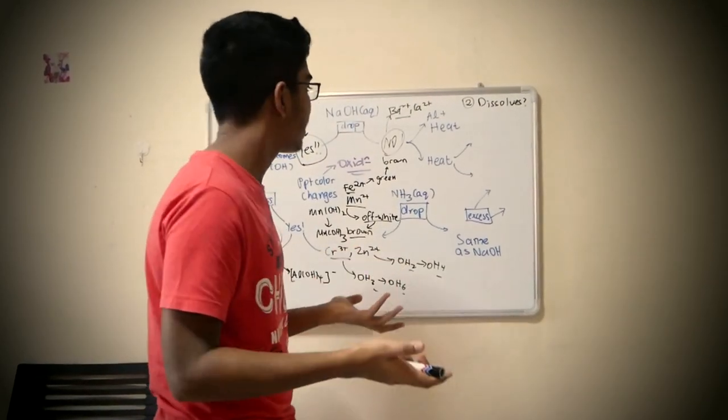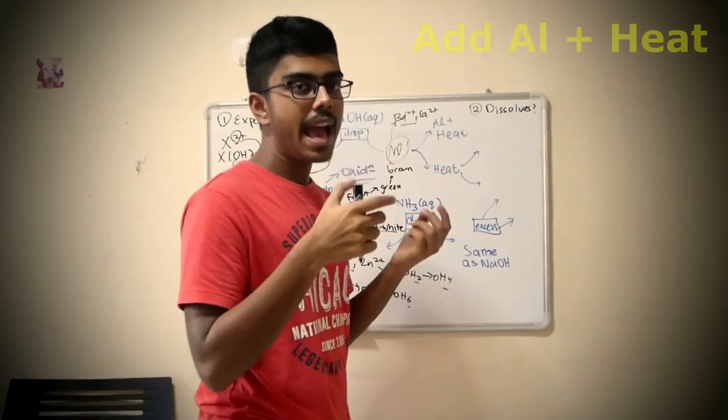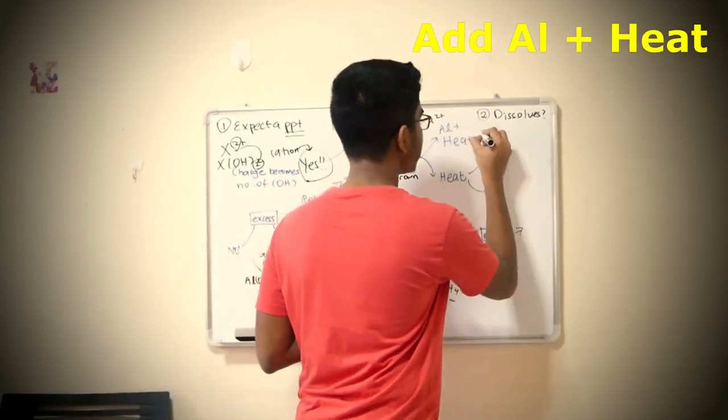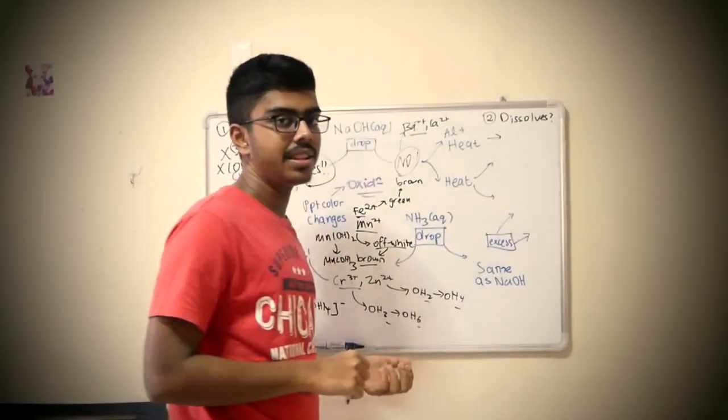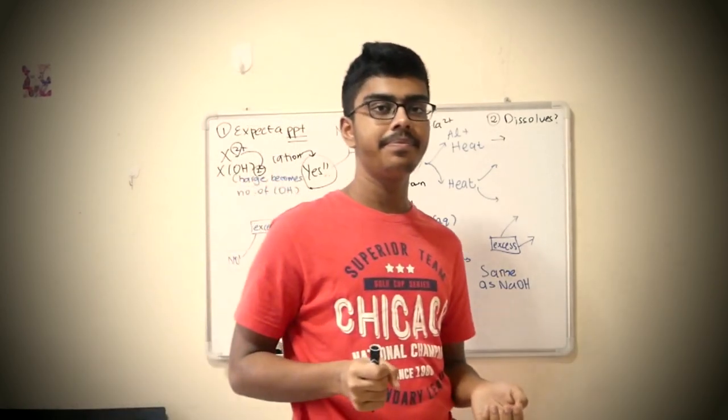There's no precipitate and you're like what the hell. So it will proceed into two parts. Either they ask you to add aluminum, add a piece of aluminum foil and heat it. In this case, let's recall what ions you're testing for. And in this case it's anions. Think about it.